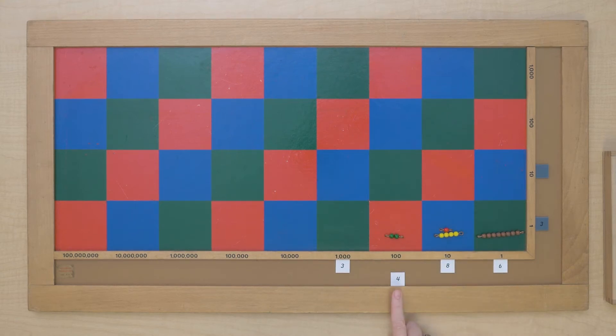Now we have 400 times 3. 4 times 3 is 12. So that's 12 hundreds that we need.